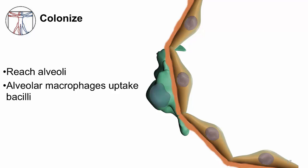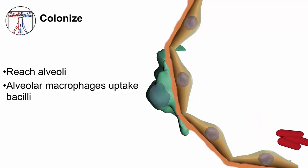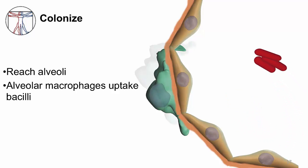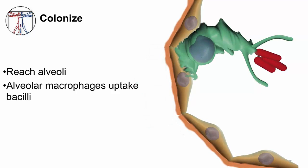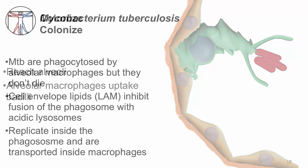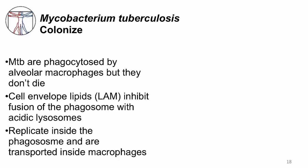In the alveoli, there are alveolar macrophages that patrol this region. Once the MTB-infected droplet nuclei reach the alveoli, alveolar macrophages will reach out and engulf the bacilli. Although MTB is phagocytosed by alveolar macrophages, they don't die. Their ability to survive intracellularly probably evolved from prior interactions with free-living amoeba in the environment. Several properties allow MTB to survive within macrophages — for example, MTB can evade the immune response using their cell envelope lipids, LAM for instance, to inhibit fusion of the phagosome with acidic lysosomes.